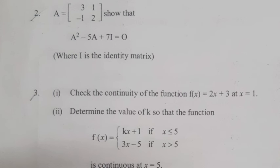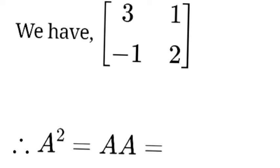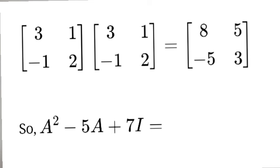Problem 2: A = {3, 1, -1, 2} (a 2×2 matrix). Show that A² - 5A + 7I = 0. Answer: A² = A × A = [[3,1],[-1,2]] × [[3,1],[-1,2]] = [[8,5],[-5,3]].